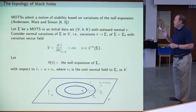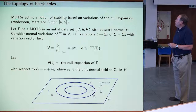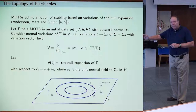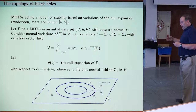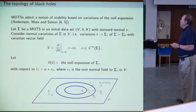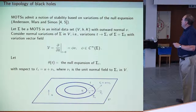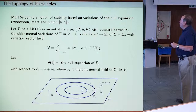MOTS admit an important notion of stability, introduced by Andersson, Mars, and Simon. Stability has to do with variations in the null expansion. Let sigma be a MOTS in an initial data set VHK with outward normal nu. We consider normal variations of sigma — a one-parameter family of surfaces sigma_t, with sigma_0 being sigma — with variation vector field phi times nu, where phi is any smooth function along sigma.